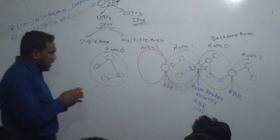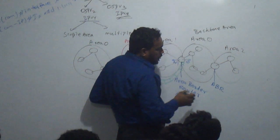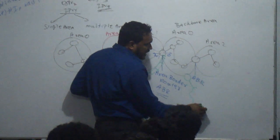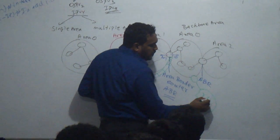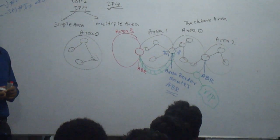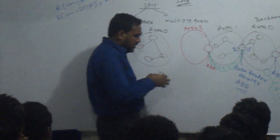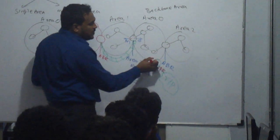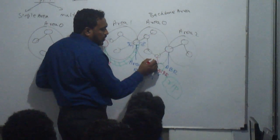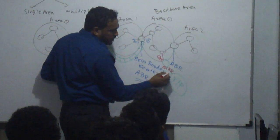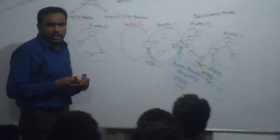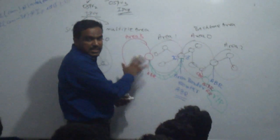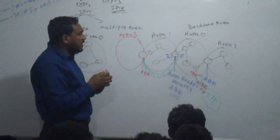There can also be a router connected to other routers where a different routing protocol is being used. That router — part of which connects to OSPF and another part connects to another protocol — is called an ASBR (Autonomous System Boundary Router). Also, in each and every area there will be someone called DR and BDR.